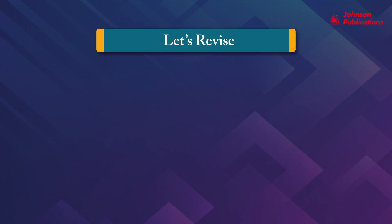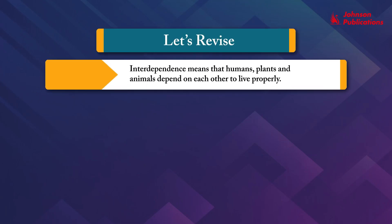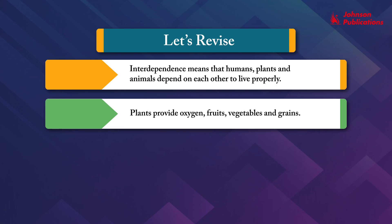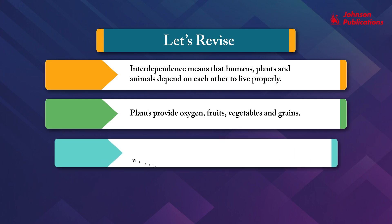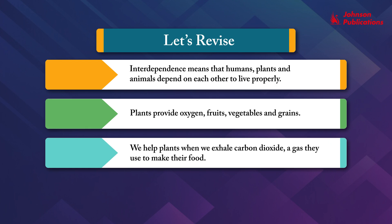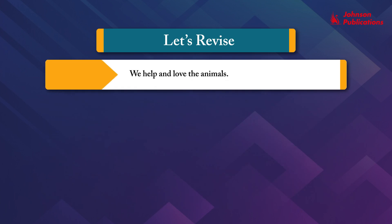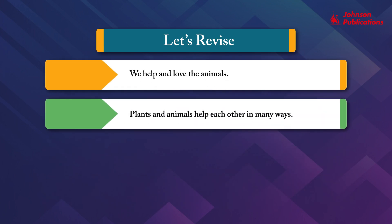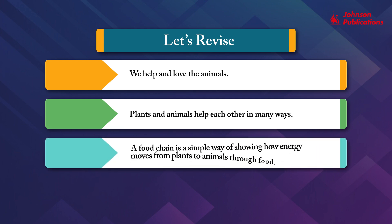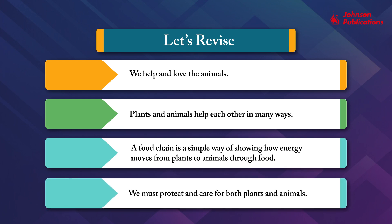Let's revise. Interdependence means that humans, plants and animals depend on each other to live properly. Plants provide oxygen, fruits, vegetables and grains. We help plants when we exhale carbon dioxide, a gas they use to make their food. We depend on animals for different things like milk, wool and honey, and we help and love the animals. Plants and animals help each other in many ways. A food chain shows how energy moves from plants to animals through food. We must protect and care for both plants and animals.